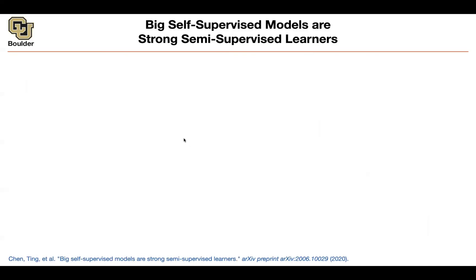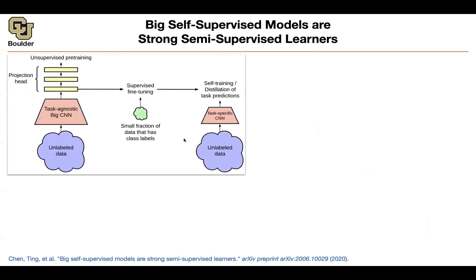We saw self-supervised, we saw supervised, and now we are going to extend this to semi-supervised learning. We'll be using the same ideas for different label ratios — the ratio of labeled data, or the percentage of labeled data in your dataset.